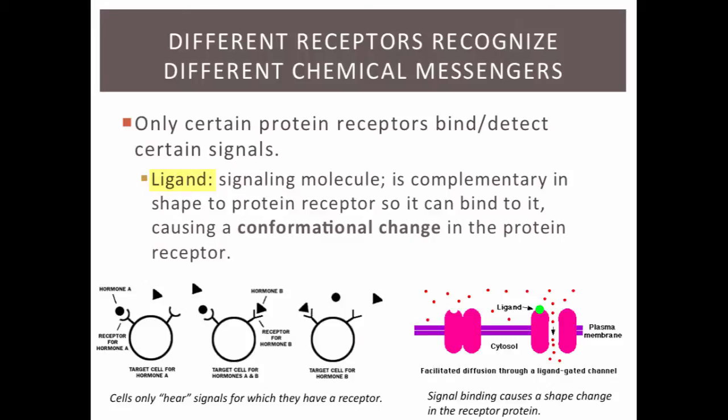Ligand is another word for signaling molecule. The shape of a ligand must match the shape of a protein receptor so they can bind together like puzzle pieces. When they bind, this triggers a shape change in the protein receptor, also known as a conformational change.